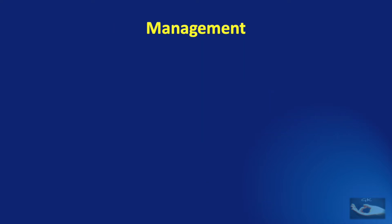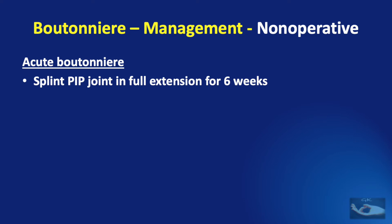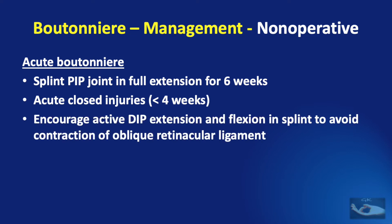Though the Boutonniere deformity does not lead to as much loss of function as occurs in a swan neck deformity, it requires management since range of movements of the fingers are grossly restricted. In acute Boutonniere deformity, non-operative management is significant. We need to splint the proximal interphalangeal joint in full extension for 6 weeks, done for acute closed injuries up to 4 weeks following injury. At the same time, we should encourage active DIP joint extension and flexion with the splint preventing PIP joint flexion.